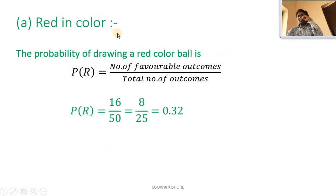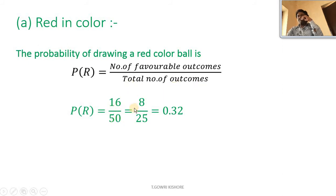Part A — red in color: the probability of drawing a red colored ball equals the number of favorable outcomes divided by total outcomes, that is 16 by 50, which equals 8 by 25, or 0.32. So probability of getting a red colored ball is 0.32.